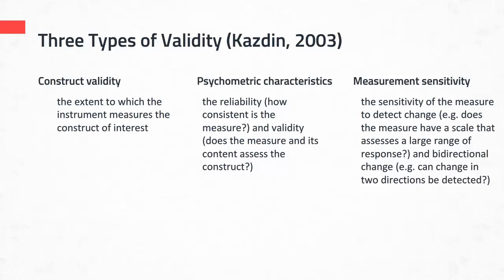Now that we've defined reliability and validity, let's talk about choosing an instrument to measure variables in a study. Kasdan in 2003 said that there are three important key characteristics related to validity and reliability to consider when selecting an instrument: construct validity, psychometric characteristics, and measurement sensitivity.